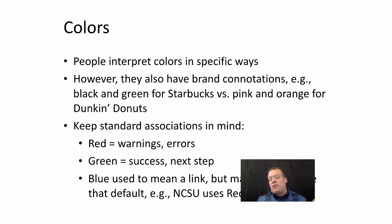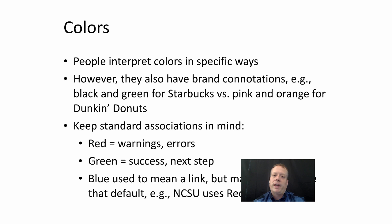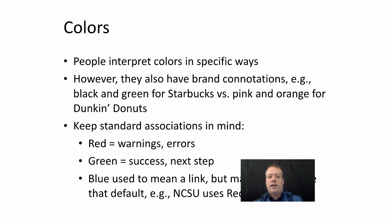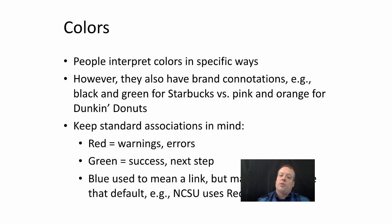There are also standard associations people have with different colors. Red is often associated with warnings or errors, so you can use that to your benefit — if someone fails to fill out a form, the incorrect field is often highlighted in red. Green is often a good indication of correctness or a next step, so buttons to proceed might be shown in green. Blue is traditionally used to indicate a link, though many now change that default — it has evolved over time to simply be a color that contrasts with the background. In the NC State examples, they use red to highlight links, which works because all other text is black and white, and the red stands out.